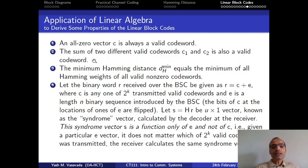The second property is that if you take modulo to sum of any two different valid code words, C1 and C2, then the resultant binary sequence, which is obviously n bit long, is also a valid code word.